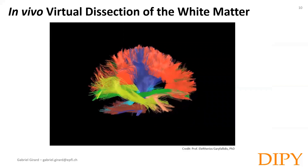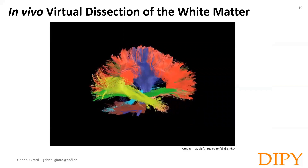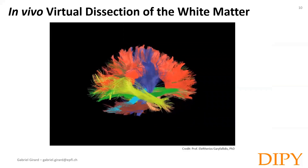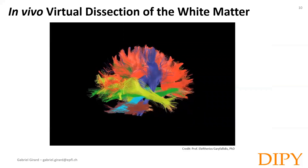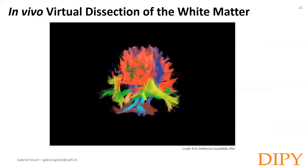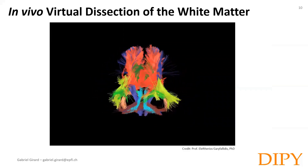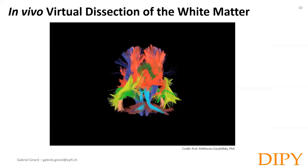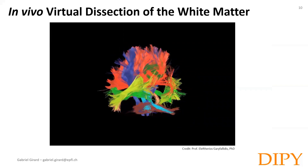For instance, in this video you can see the corticospinal tract in blue, the corpus callosum in red, and the inferior fronto-occipital fasciculus in green.